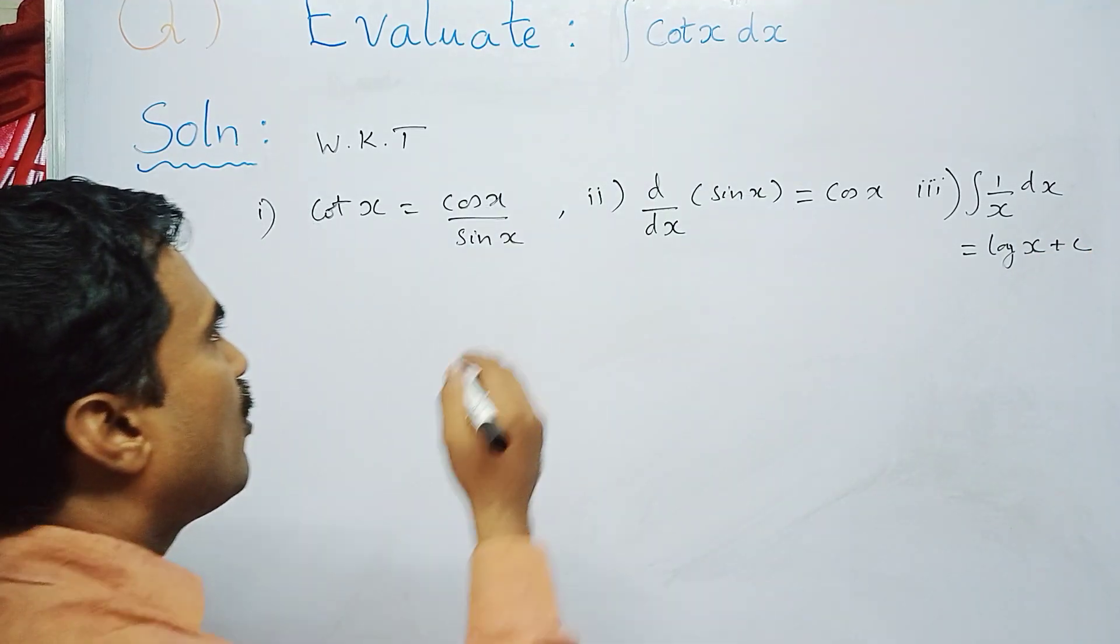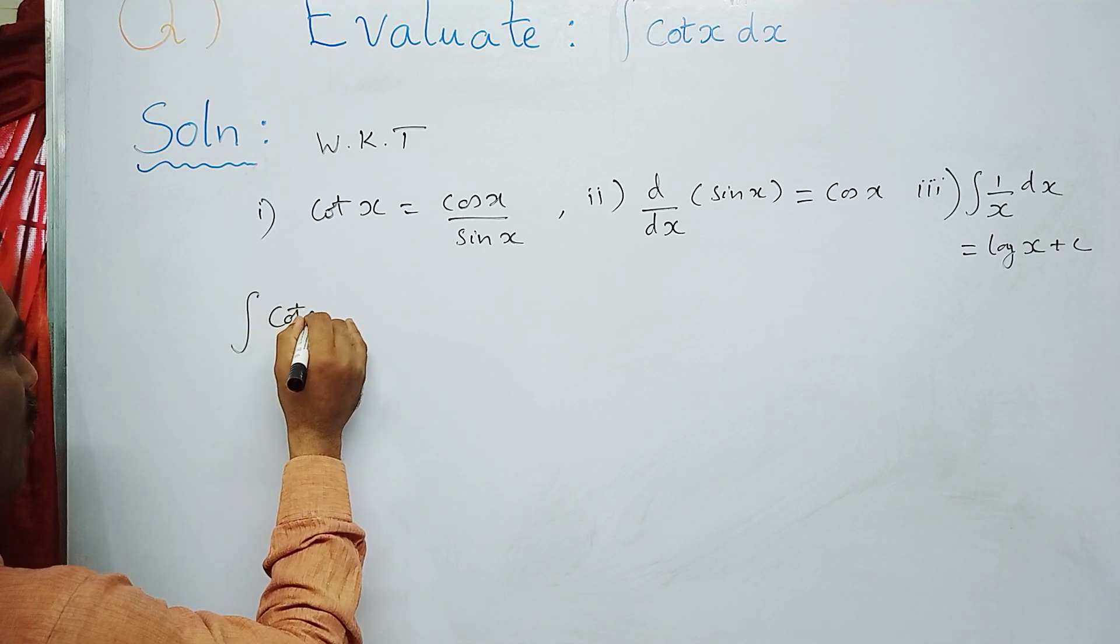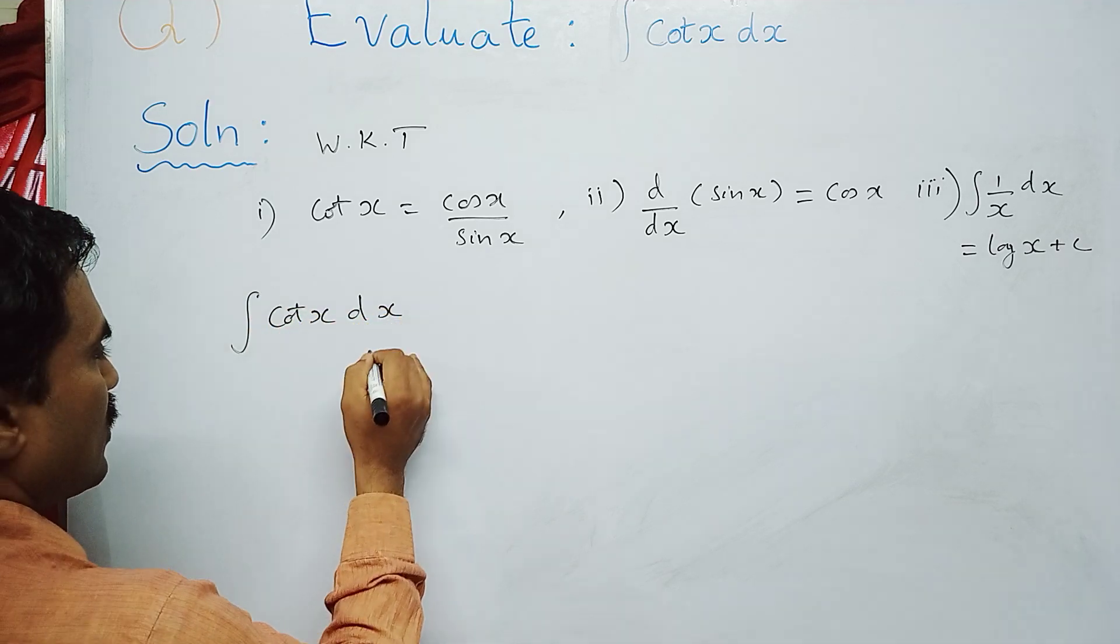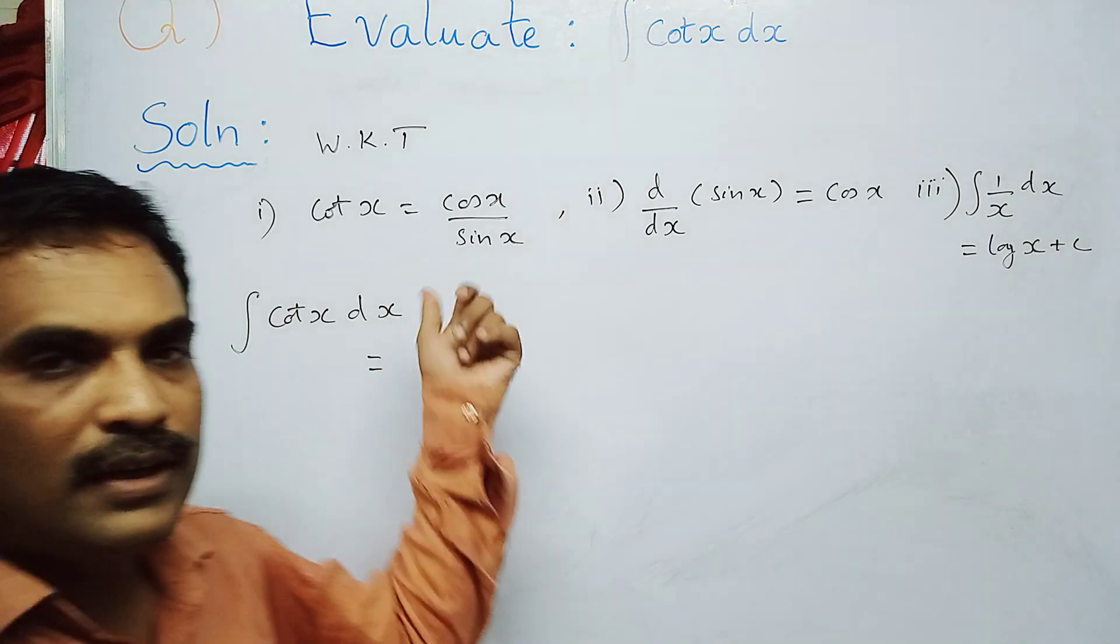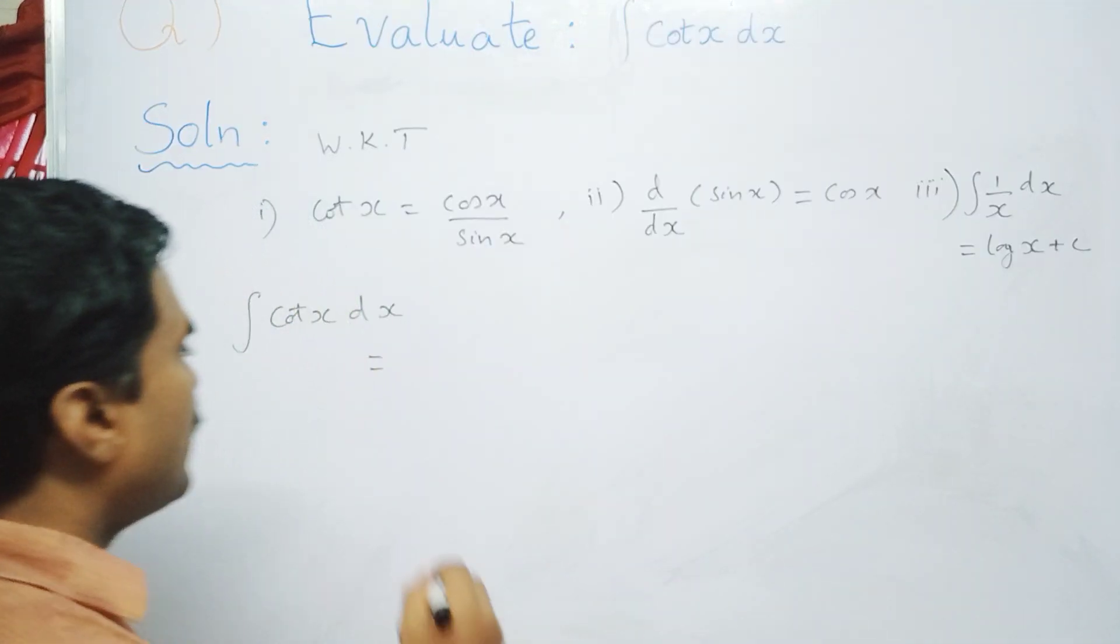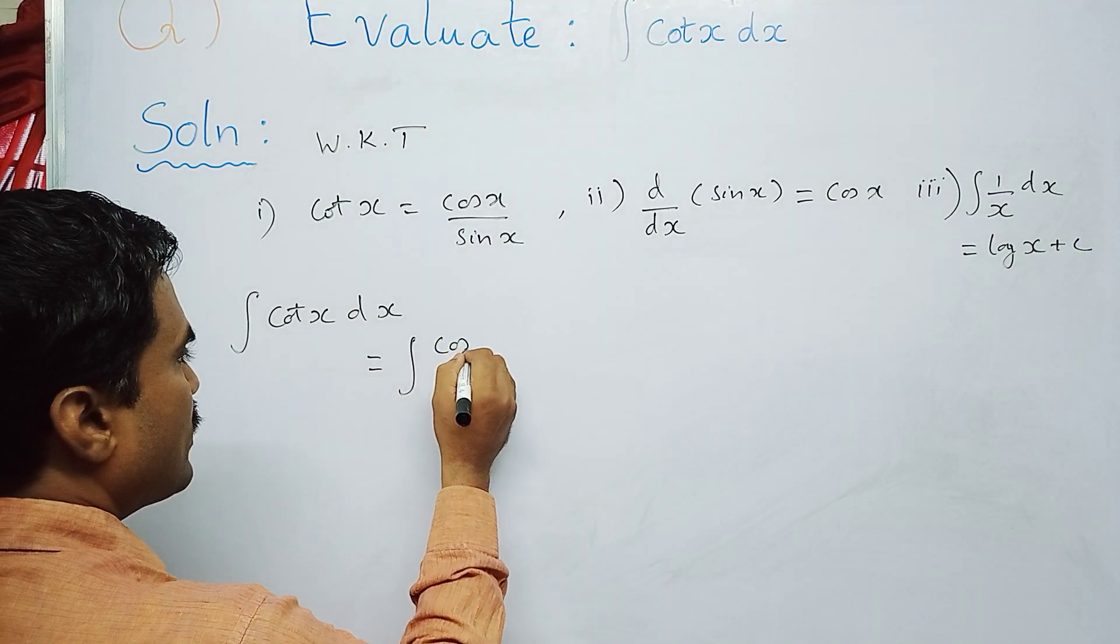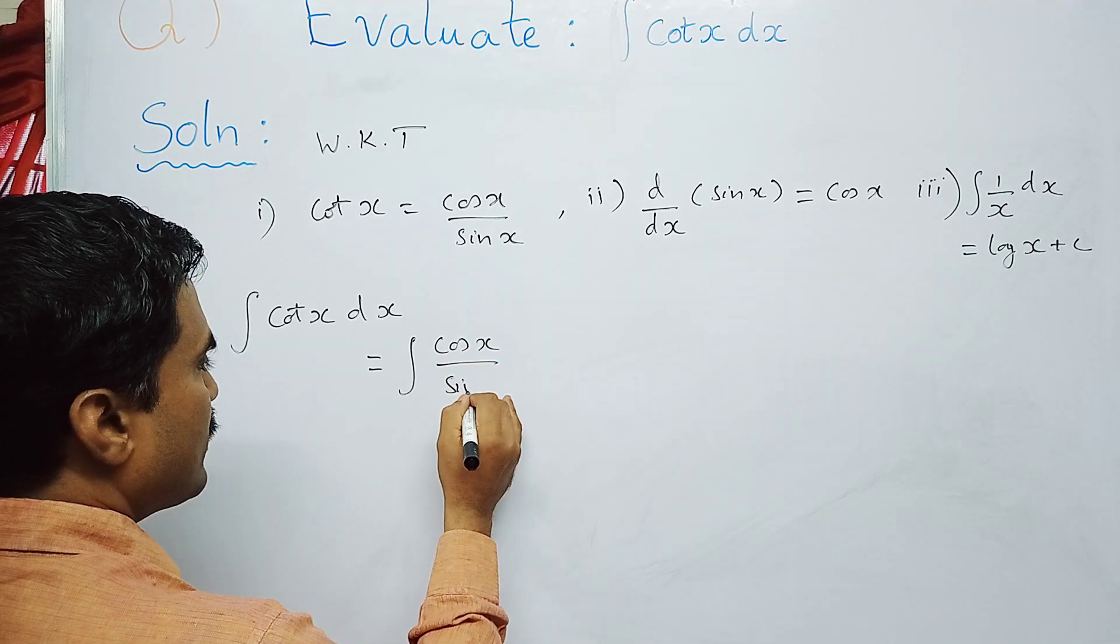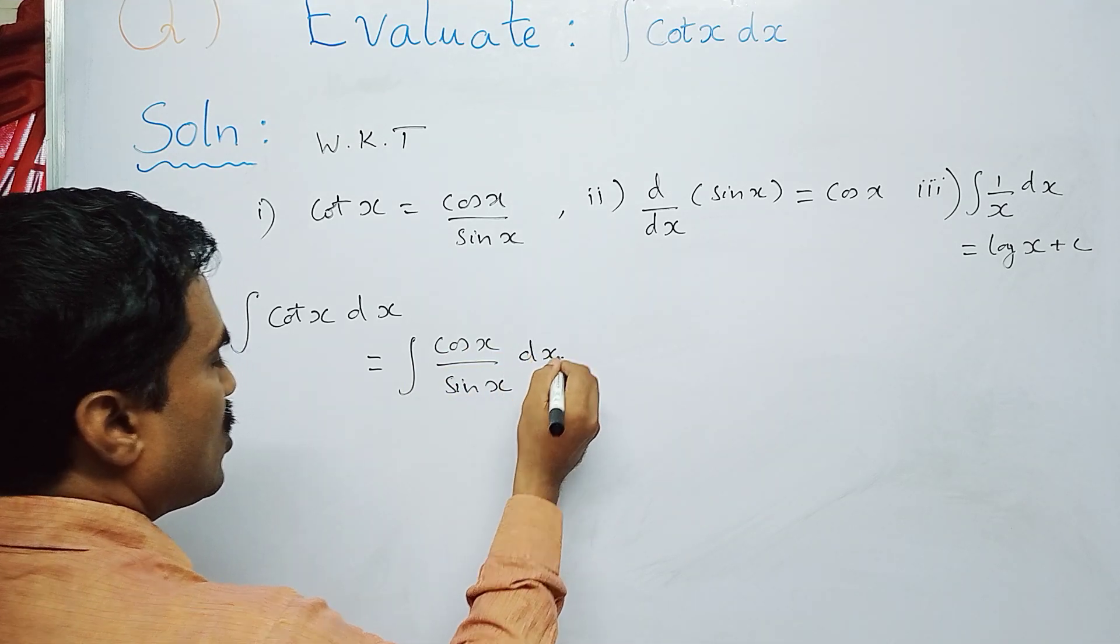Now we write the problem here. What is integral cot x dx? First, we apply the trigonometric formula, so cot x can be written as integral (cos x / sin x) dx. This integral is of the form integral f'(x)/f(x) dx, so you have to put f(x) as u because we are using substitution method to solve this.